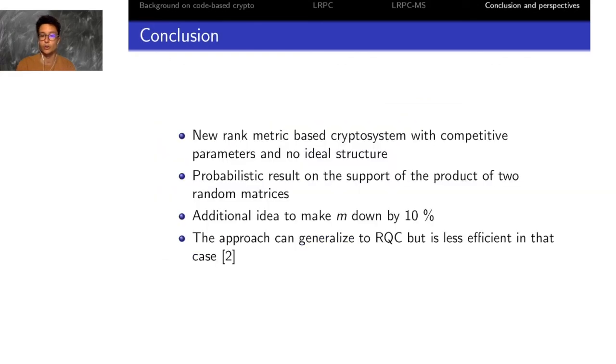To conclude, I will say that we presented a new rank metric based cryptosystem with competitive parameters and no ideal structure, which gives an additional guarantee of security. We give the proof of a low decoding failure rate on our algorithm, which is based on the probability result of the support of two random matrices. For future work, we can have an additional idea to reduce the parameters even further.